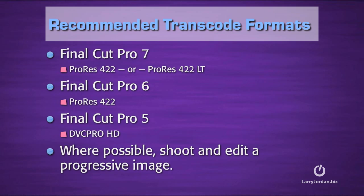When it comes time to decide what transcode formats you want to use, it really depends upon what version of Final Cut you're using. If you're running Final Cut Pro 7, I recommend transcoding into ProRes 4-2-2 or ProRes 4-2-2 LT. The examples in today's exercise are all ProRes 4-2-2 LT. For Final Cut Pro 6, I also recommend ProRes 4-2-2 LT. And if you've got Final Cut Pro 5, transcode into DVC Pro HD. Final Cut Pro 5 doesn't support ProRes, and DVC Pro HD is a much easier format for computers to process — it runs better on G3s, G4s, and G5s than ProRes does.